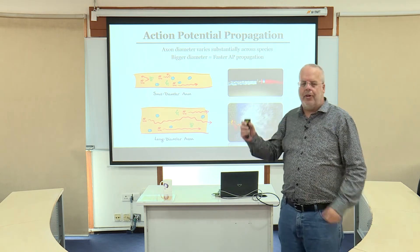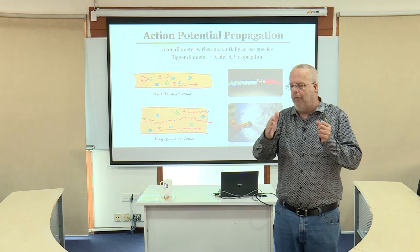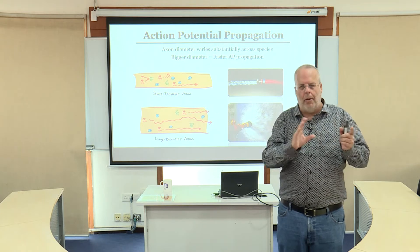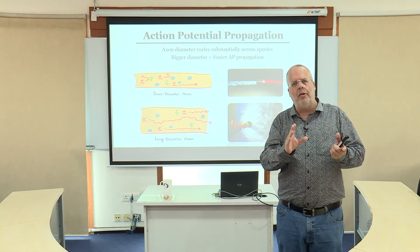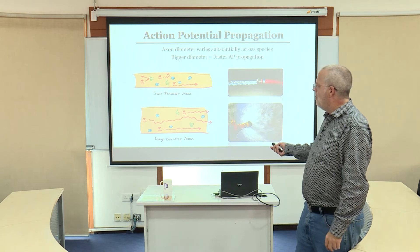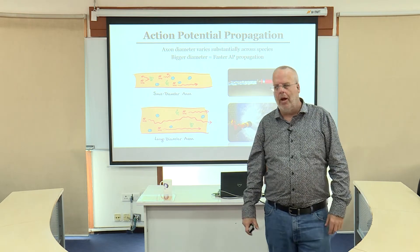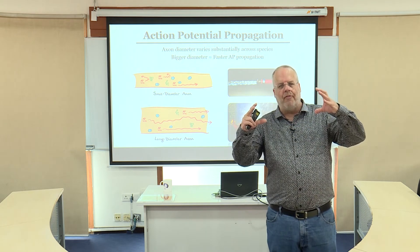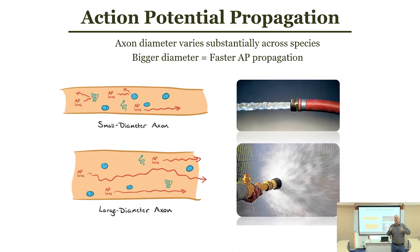Once the action potential is generated, it's constant in terms of its amplitude and speed down a given axon. But there's a lot of variability between different types of neurons. What determines that speed? Well, one factor is the diameter of the axon — just like a garden hose versus a fire hose, the bigger the diameter the faster the water flows through. The same is true for an axon: bigger diameter axons lead to faster conduction velocity, meaning the action potential travels more quickly.